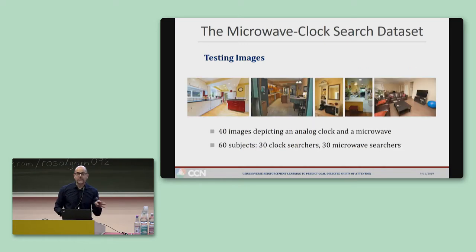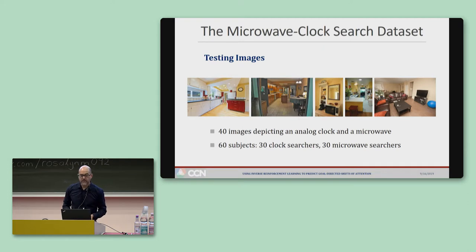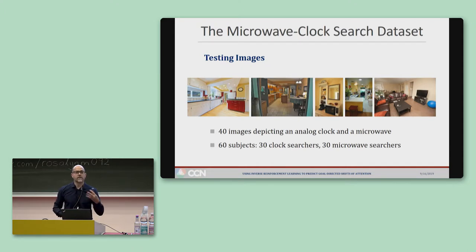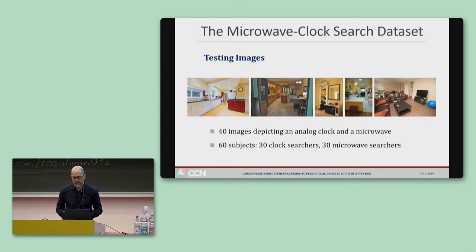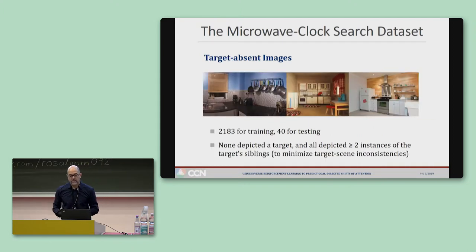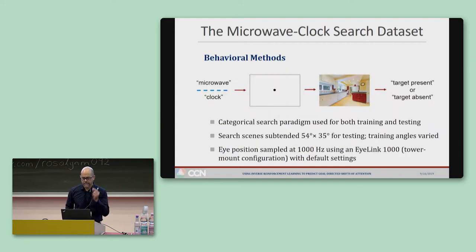Having this control meant tolerating a relatively small test dataset of only 40 images, which we tried to compensate for with a larger pool of 60 subjects — 30 searching for a clock, the other 30 searching the same images for a microwave. There were also an equal number of target-absent images, but I'm not going to talk about those today.